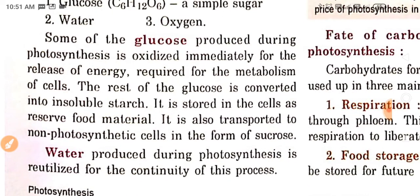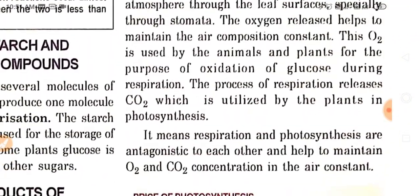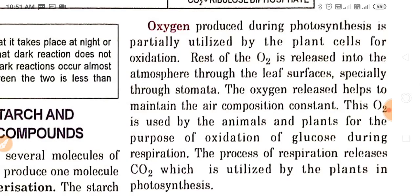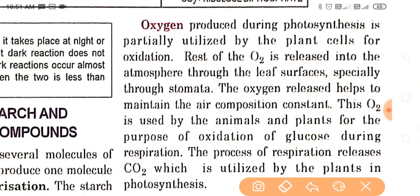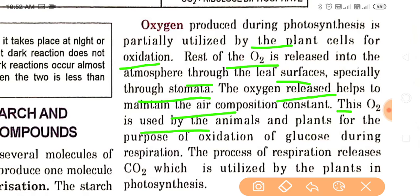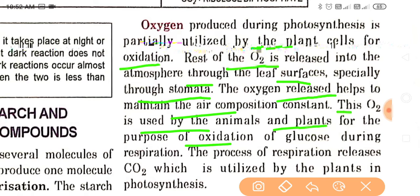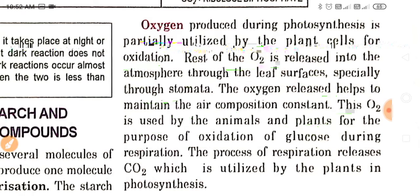Water produced during photosynthesis is reutilized for the continuity of this process. Oxygen produced during photosynthesis is partially utilized by the plant cells for oxidation. The rest of O2 is released into the atmosphere through the leaf surfaces, especially through stomata. The oxygen released helps to maintain the air composition constant. This O2 is used by animals and plants for the purpose of oxidation of glucose during respiration.